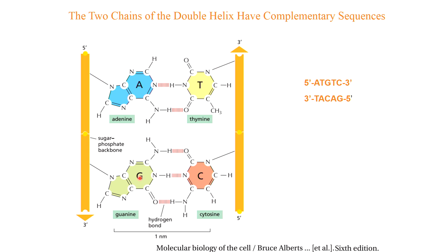The bases can pair in this way only if the two polynucleotide chains that contain them are antiparallel. That's an important point: the two strands in DNA must be antiparallel in order for the whole molecule to hold together. This antiparallel orientation is directly related to the 5' and 3' ends of these molecules.